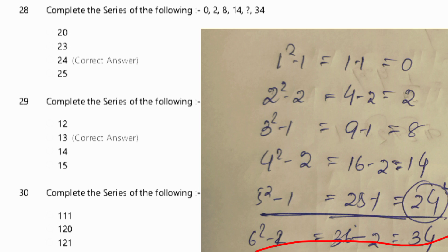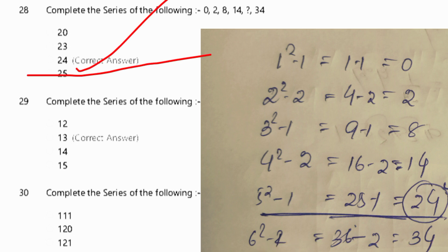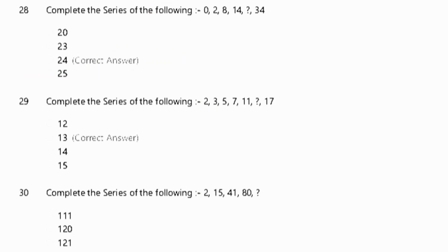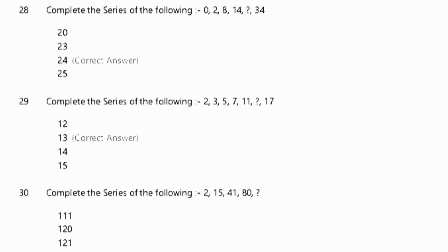So the right answer is 24. Next, number 29: complete the series of the following. The series is 2, 3, 5, 7, 11. This is the prime number series, so the next number is 13. The second option, 13, is correct.